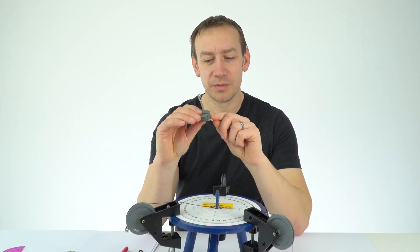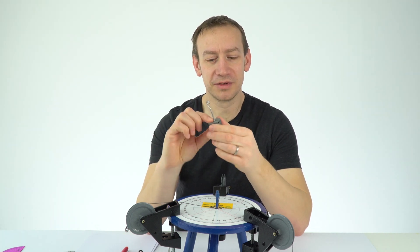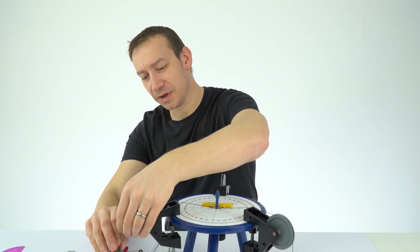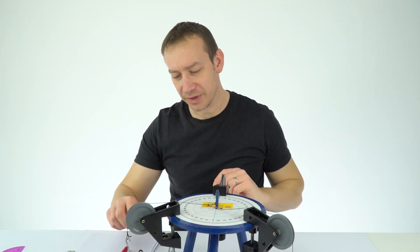This one over here has a 10 gram mass hanger plus five 10 gram masses. So this one has a mass of 60 grams and if we know the mass we can work out the weight in newtons. We've got a value of 60 grams over there.